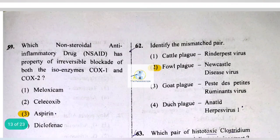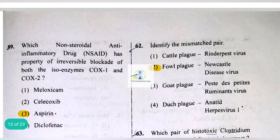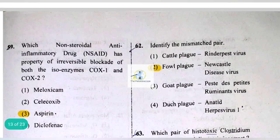Identifying the mismatched pair: cattle plague is caused by rinderpest virus — that is true. Fowl plague is not caused by Newcastle disease virus, so this is a mismatched pair. Goat plague is PPR, which is correct.